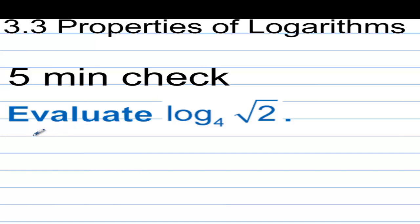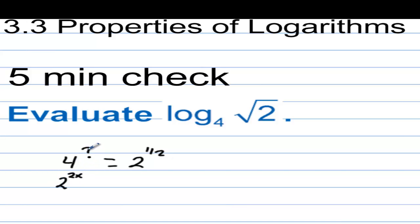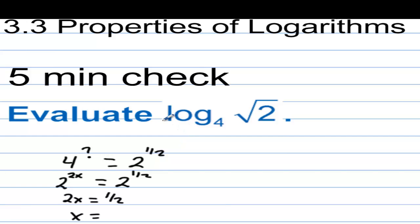We have a 5-minute check here. Evaluate log base 4 of the square root of 2. We're looking at 4 to some power equal to 2 to the one-half. We can write 4 as 2 squared, so let's call the missing exponent x. So we have 2 squared to the x equals 2 to the one-half, meaning 2x must equal one-half. Multiplying both sides by one-half, the missing value evaluates to one-fourth.